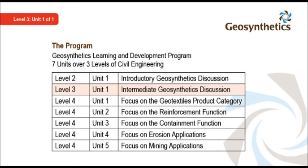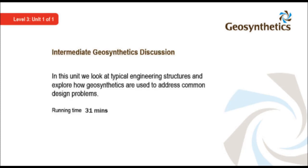The program consists of seven mini lectures, moving from an introductory discussion through an intermediate stage, where we examine common civil engineering structures, before focusing on some common functions and applications. This topic is the intermediate discussion and has been developed for third-year undergraduate civil engineers. In this unit, we look at typical engineering structures and explore how geosynthetics are used to address common design problems.